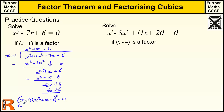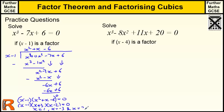Then we just factorise the quadratic: x minus 1 times x and x. What multiplies to give minus 6 but adds to give 1? That's plus 3 and minus 2. So x minus 1 times x plus 3 times x minus 2 equals 0, therefore x equals 1, x equals minus 3, and x equals 2.